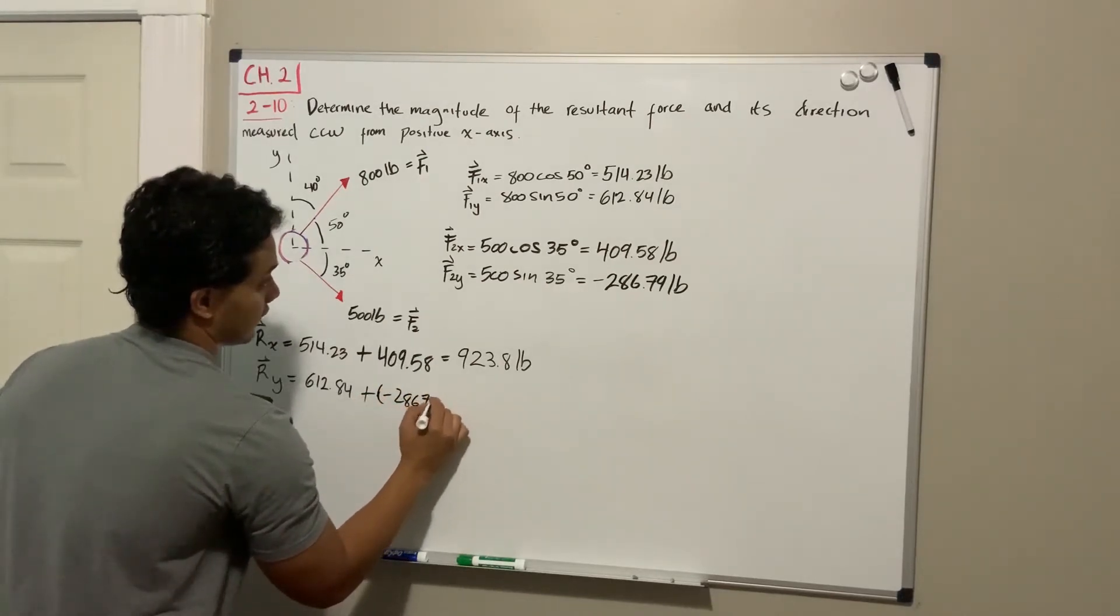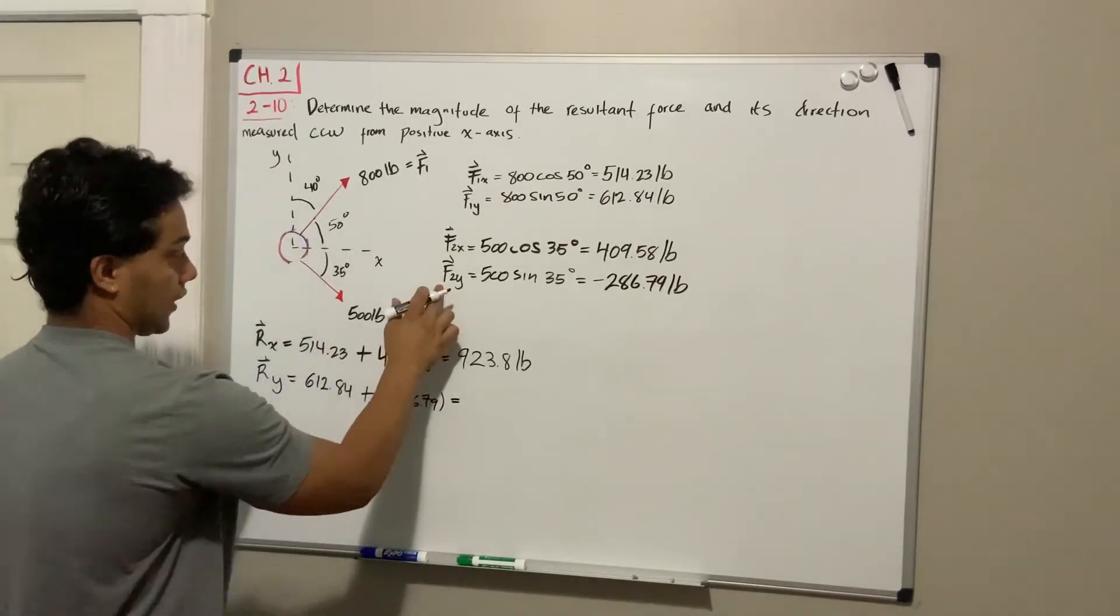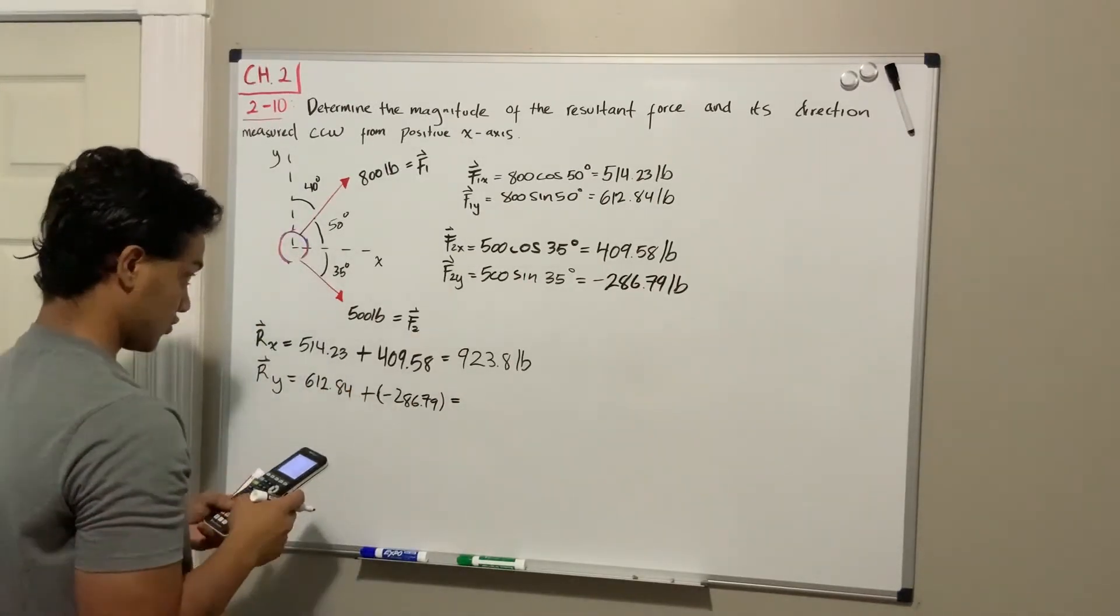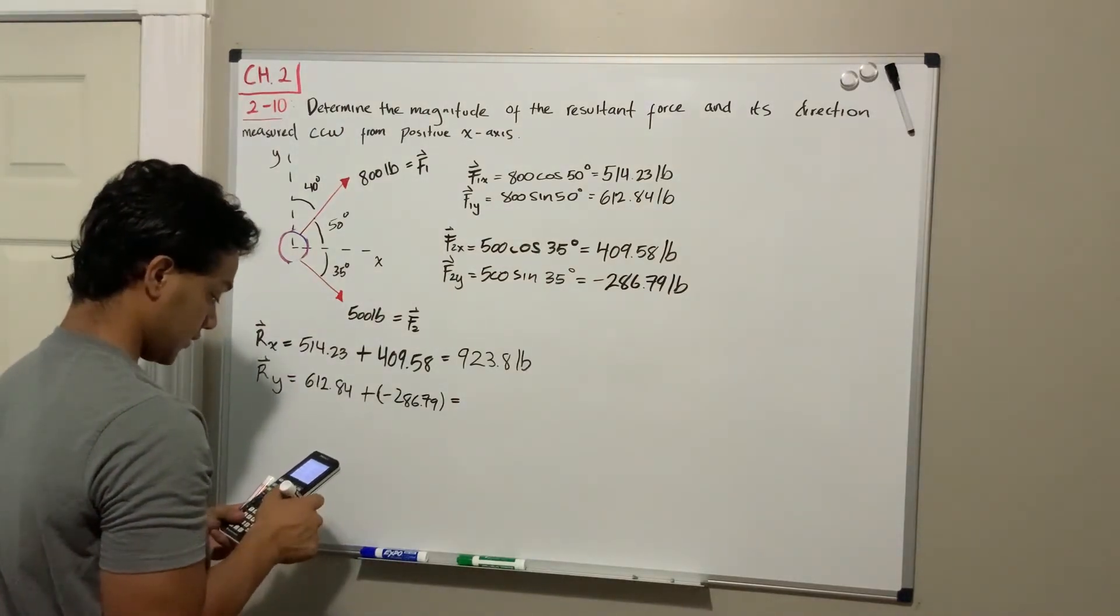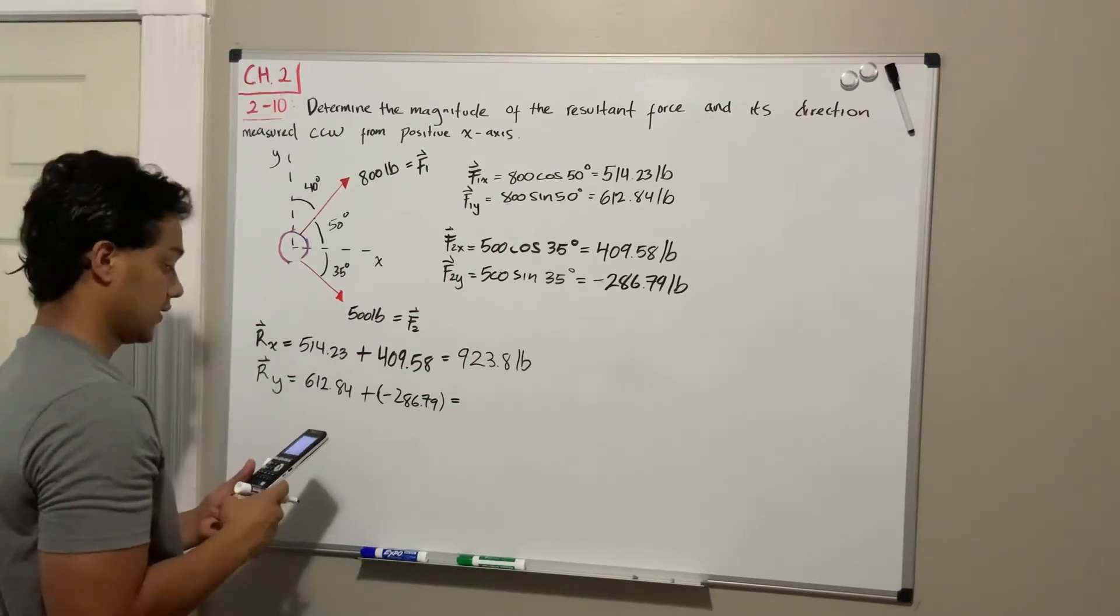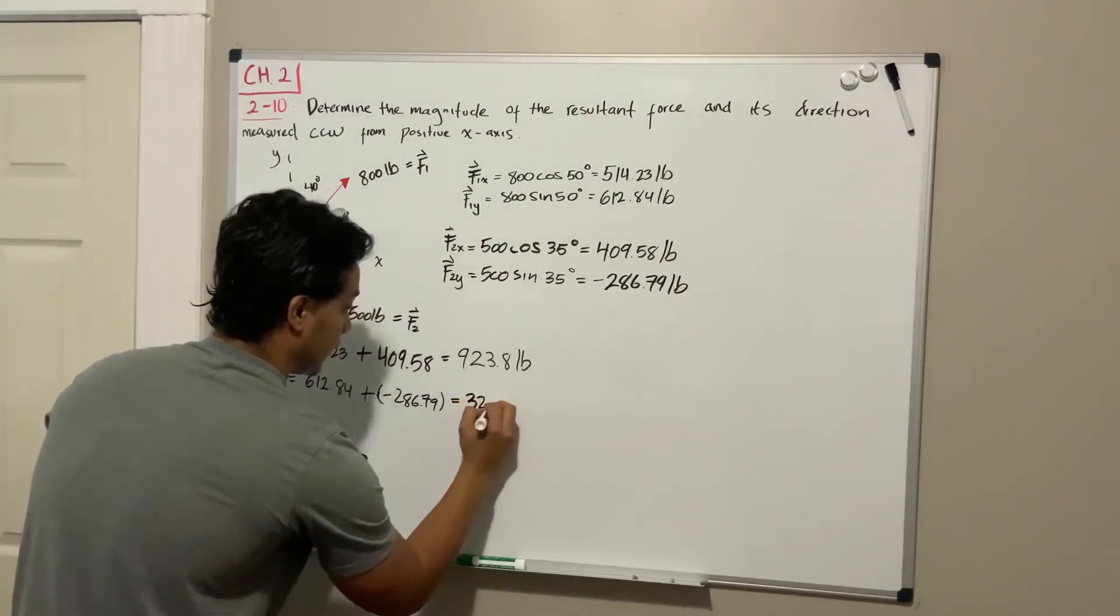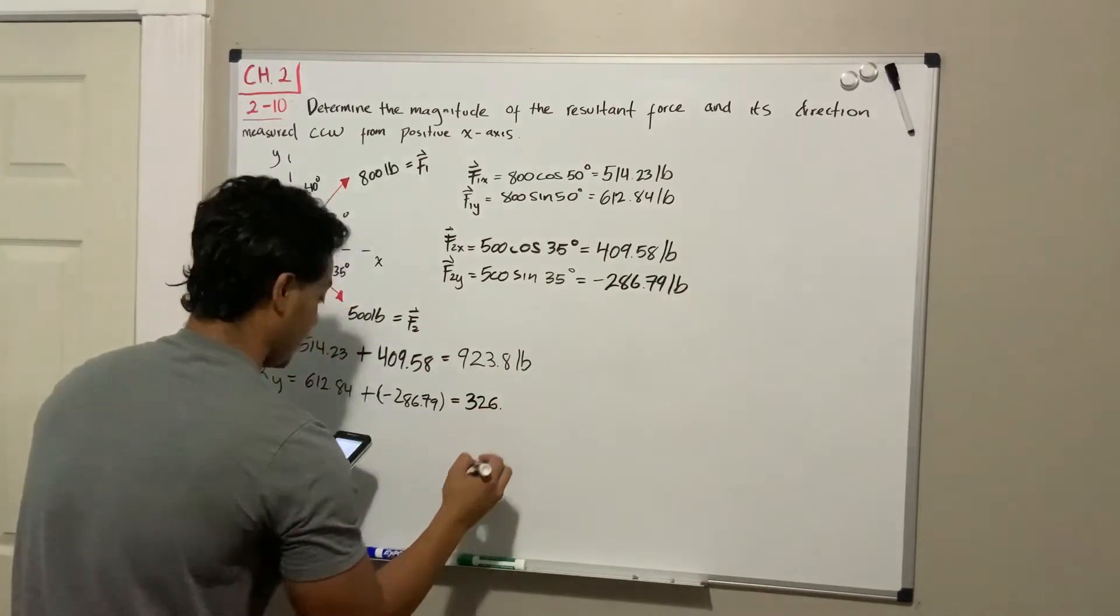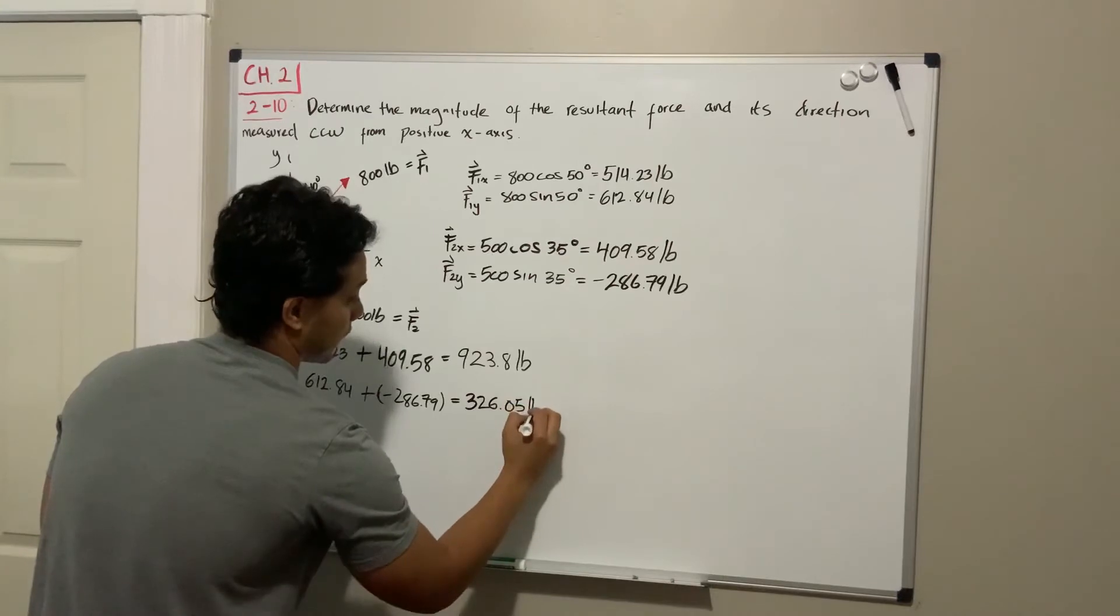So we're gonna do 612 minus the 286 and we get 326.05 pounds.